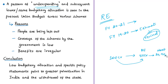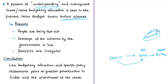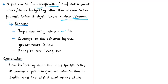This pattern of underspending and subsequent lower or same budgetary allocation is seen across schemes like social security pensions, Anganwadi services, and midday meals. Reasons for underspending include people being left out of scheme coverage or irregular benefits. The author concludes that all social sectors are grossly underfunded, and there is little hope about how budgeted funds will ultimately reach the beneficiaries.